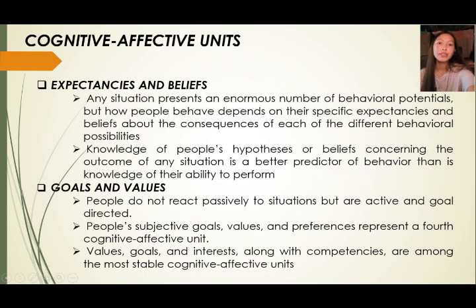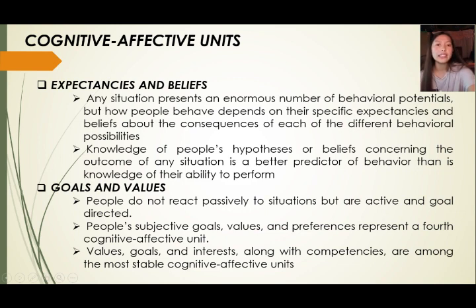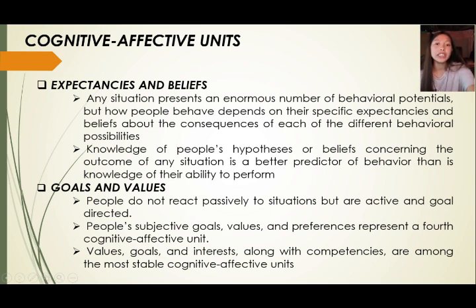The third cognitive affective unit is goals and values. People do not react passively to situations but are active and goal-directed. People's subjective goals, values, and preferences represent a fourth cognitive affective unit. For example, two college students may have equal academic ability and equal expectancy for success in graduate school, but the first places more value on entering the job market while the second chooses to go to graduate school. Although they have the same ability, they differ in value, which is why people behave differently from one another.